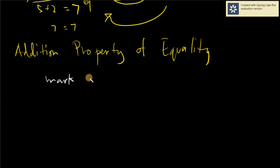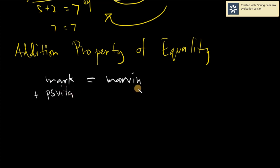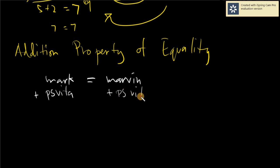For example, you have Mark and his twin Marvin. If Mark will be receiving a PS Vita and Marvin will be receiving a PS5, do you think there is equality? There's none, because the PS5 is definitely better than the PS Vita. So to make things equal, whatever Mark will be receiving, Marvin should also be receiving. That is the concept of the Addition Property of Equality — whatever happens on the left-hand side of the equation should also happen on the right-hand side.